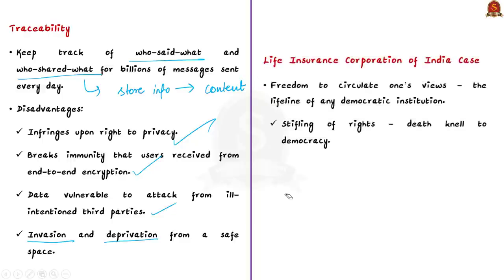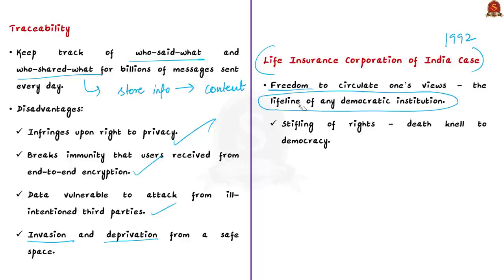The threat is not only to privacy but also a fear of invasion and deprivation of a safe space to converse, which is important for circulating one's own views. This has been upheld by the Supreme Court in the Life Insurance Corporation of India versus Professor Manubhai D. Shah, a 1992 case law, in which the Supreme Court elevated the freedom to circulate one's views as the lifeline of any democratic institution. The Supreme Court even said that any attempt to stifle this right would sound a death knell to democracy and usher in autocracy or dictatorship. On this basis, WhatsApp is challenging the Indian government.